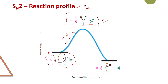As the reaction proceeds, this bond will break completely and the new bond will completely form, and we end up with our product and the bromide. The energy of the product must be lower than the energy of the starting substrate; otherwise it will not be formed. In any kinetic reaction, we must end up with something that has lower energy.